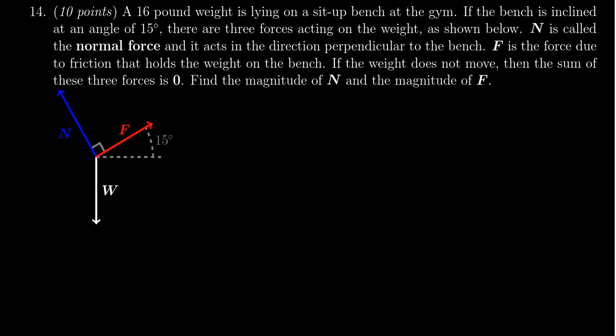We have a 16-pound weight lying on a sit-up bench at the gym. If the bench is inclined at an angle of 15 degrees, there are three forces acting on this weight, as shown in the diagram. We have this incline with the weight sitting on it. Because of the incline, the normal force acts at an angle, gravity pulls it down, and friction holds it up. That's why these three forces come into play.